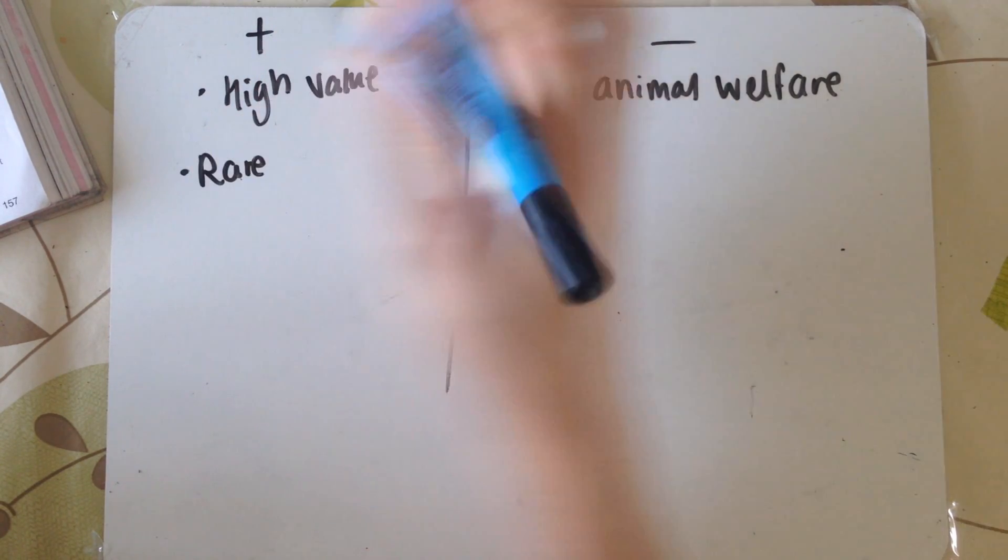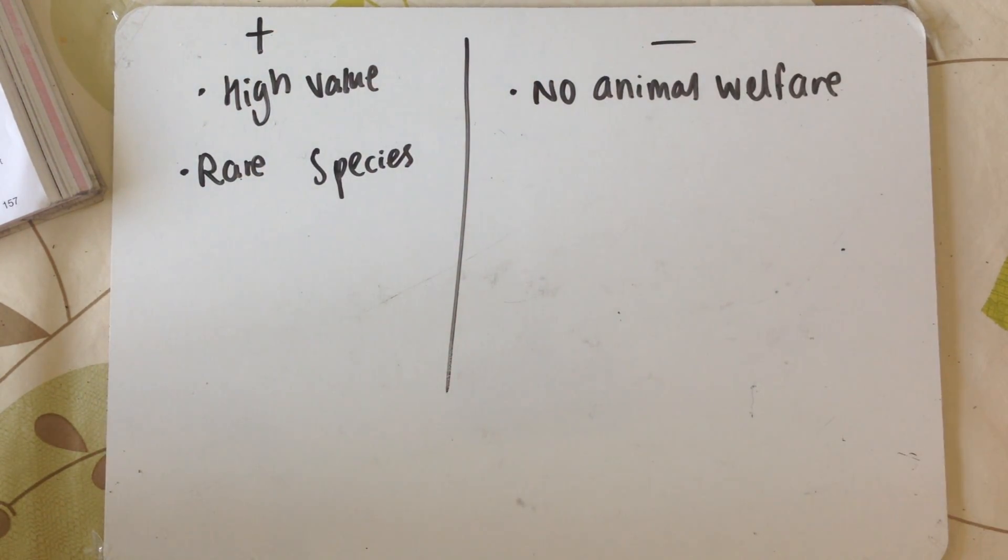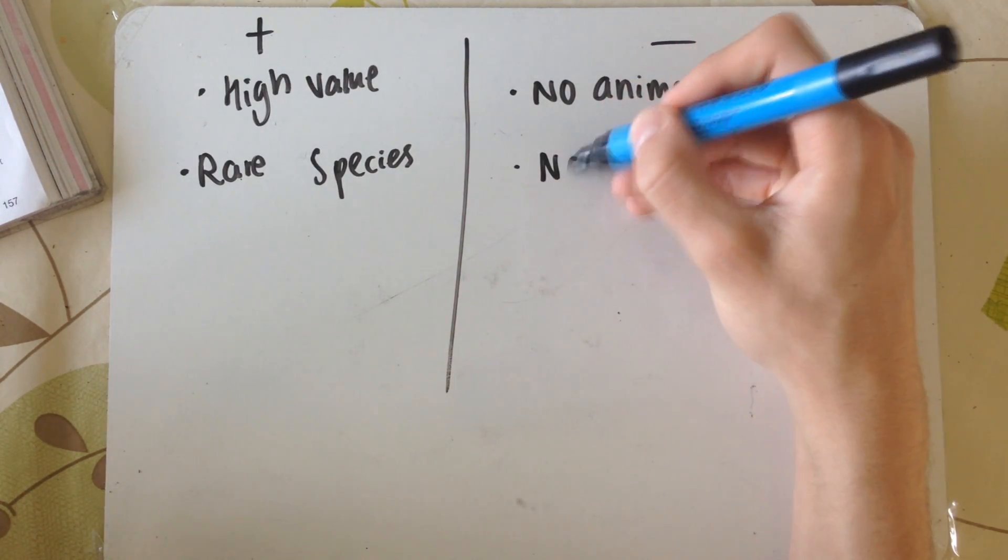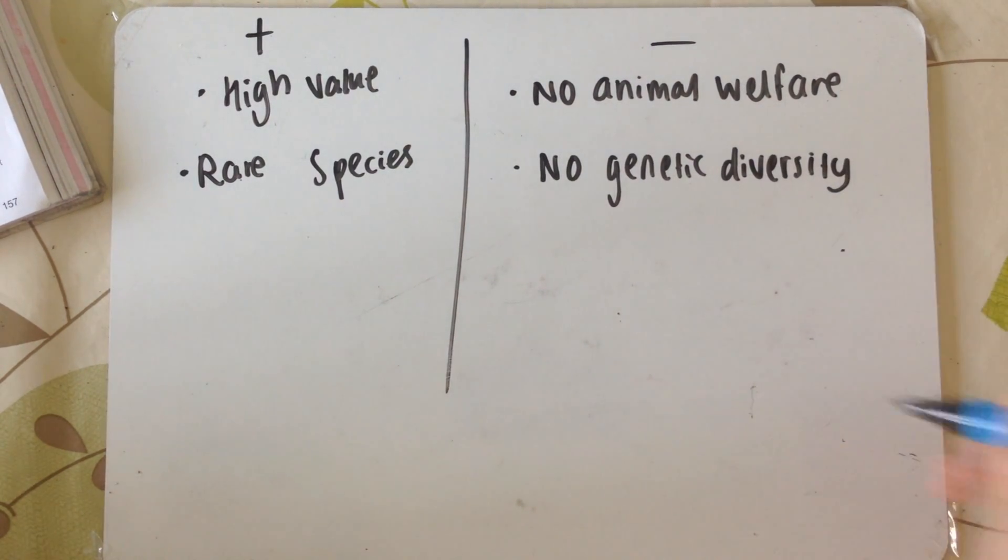Endangered and rare species can be cloned. This is great news, bringing populations back up. However, on the downside, if you're just cloning the same group of animals, you're going to have very low, basically no genetic diversity. The variation amongst individuals is going to be low.